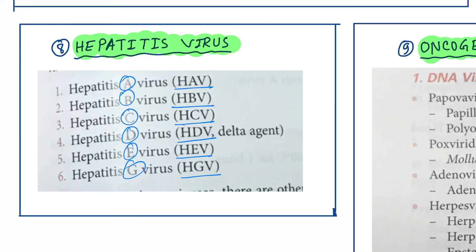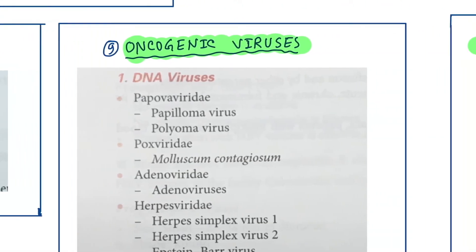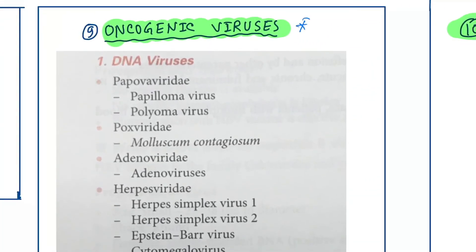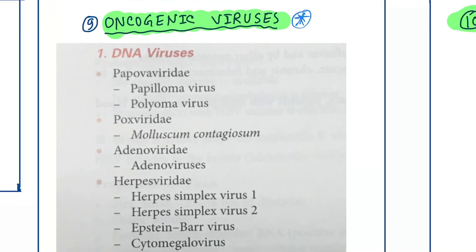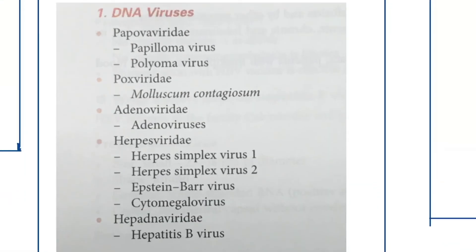That is the hepatitis virus classification. Next is the oncogenic virus classification, which is very important and is commonly asked in viva examinations.